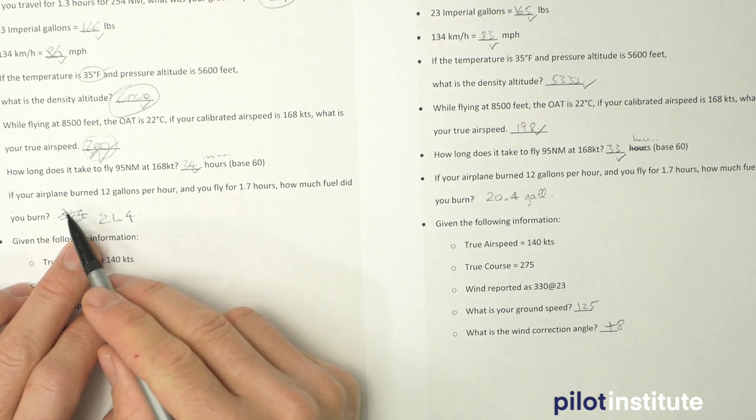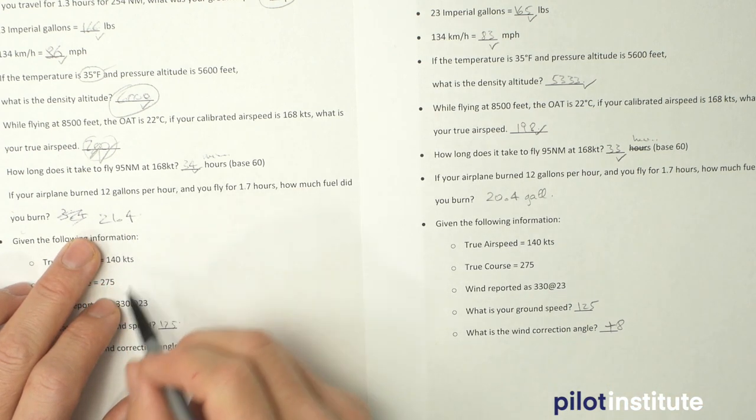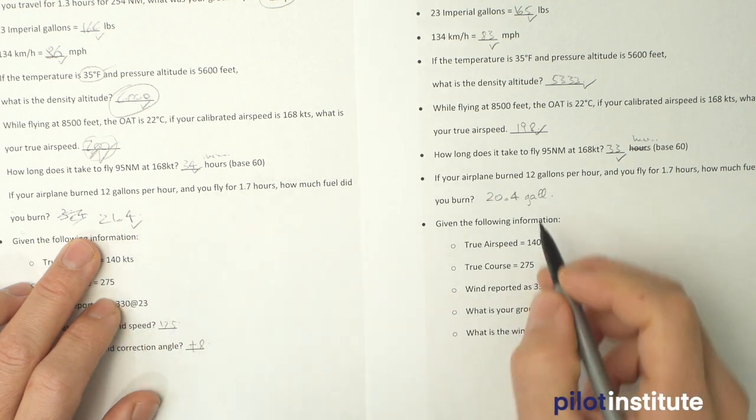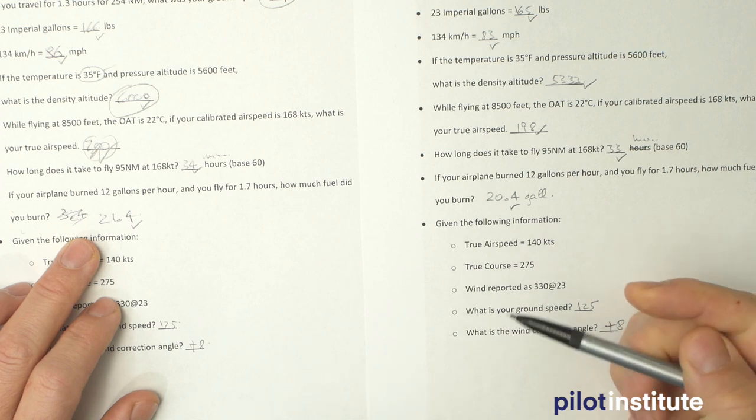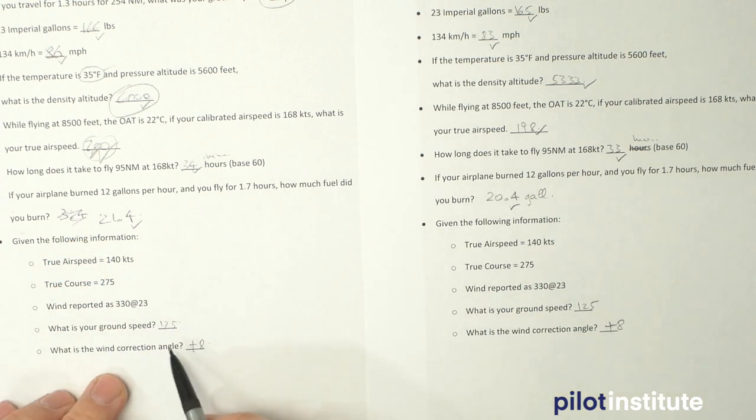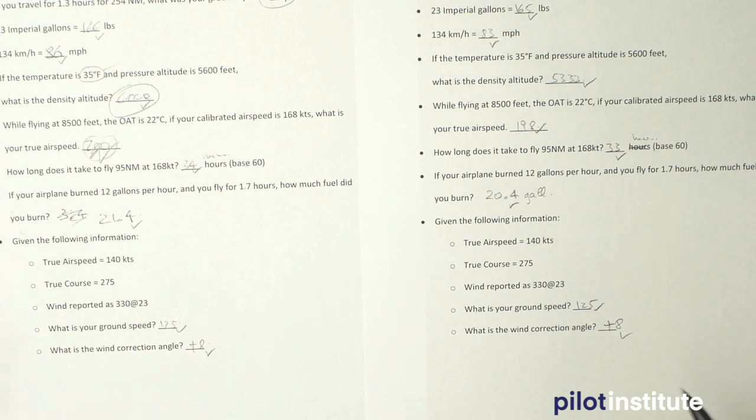And then if your plane burns 12 gallons an hour and you fly for 1.7, I got 21.4 here and 20.4 right here for the gallon. I think I may have misread this again going too fast. And then the last one, 125 and 8, 125 and 8, yeah that's pretty close.